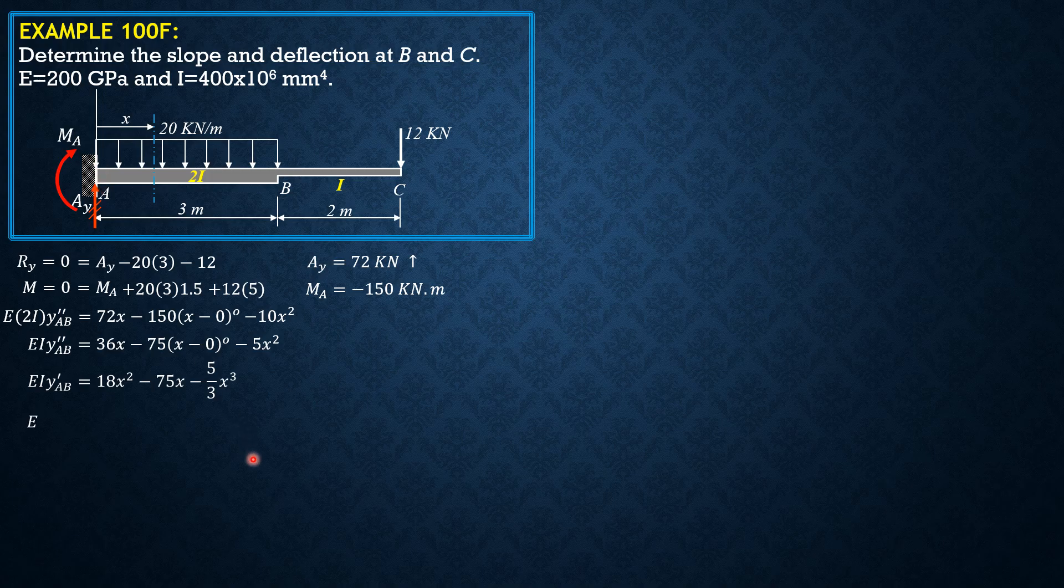Both the slope and the deflection are zero at A. So integrating again, EI Y AB equals 6X cubed minus 37.5X squared minus 5 over 12X to the 4th. And as I said, there is no C sub 2 because when X is zero, the deflection is zero or Y AB is zero.